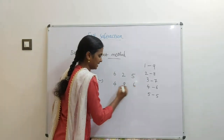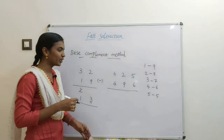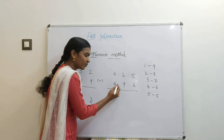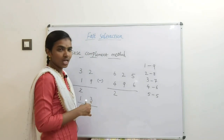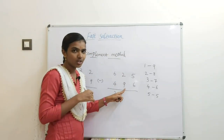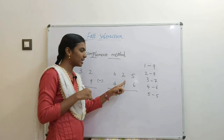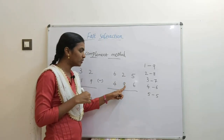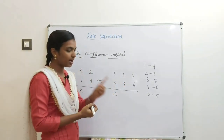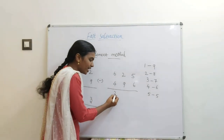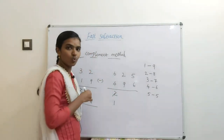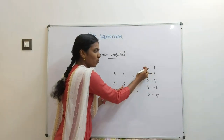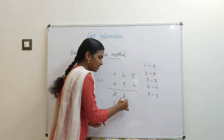Let's see a three-digit example: 625 minus 496. Moving left to right: 6 minus 4 is 2. Coming to the next digit: 2 minus 9 — it is not possible, smaller minus bigger. So we reduce one from the left side: 2 minus 1 is 1. Apply the complement: complement of 9 is 1, and 1 plus 2 is 3.